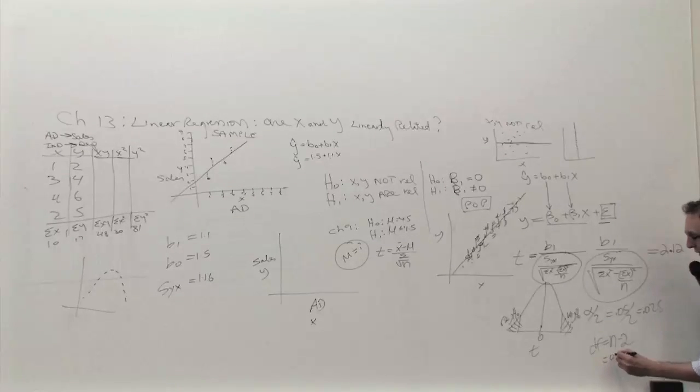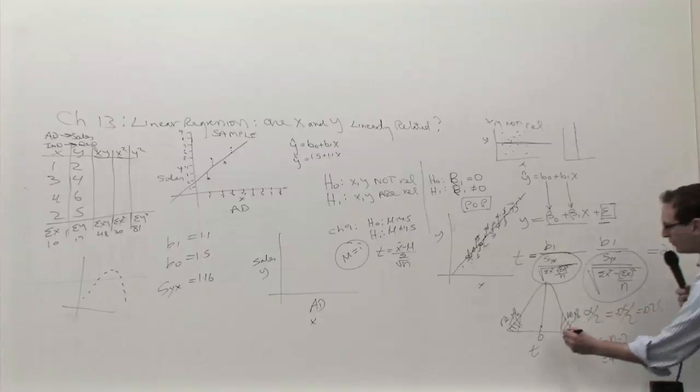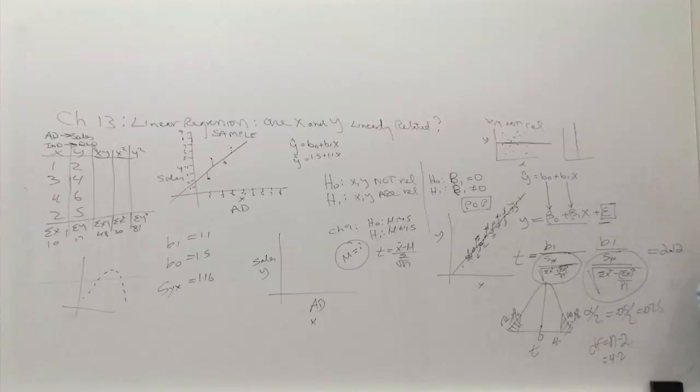So, please look up quickly on the T-table. The 0.025 column where it meets row number 2. And I think it starts with a 4. 4 point something. Yes.